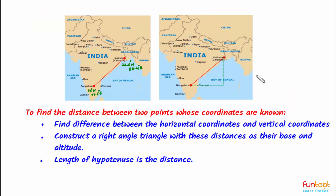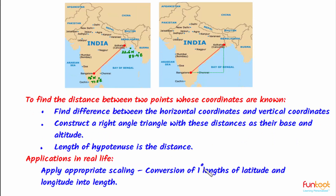Let's summarize what we have learned here. We learned how to find the difference between horizontal coordinates and vertical coordinates. We learned how to construct a right-angled triangle with these distances as the base and altitude, and then we saw that the length of the hypotenuse is the distance. We also learned the real-life application and appropriate scaling — that is, conversion of 1-degree lengths of latitude and longitude into kilometers.